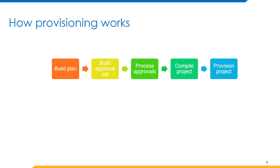IdentityIQ provisioning capabilities help companies manage system access for their personnel. Provisioning requests can be created and processed in several ways in IdentityIQ based on the needs and configuration of the installation. In many cases, modifications to access or entitlements requested in IdentityIQ can be automatically reflected in associated native applications. This section traces the flow of a provisioning plan through its evaluation and preparation for processing into the appropriate native system, including IdentityIQ tasks, business processes, and rules that operate on the data.